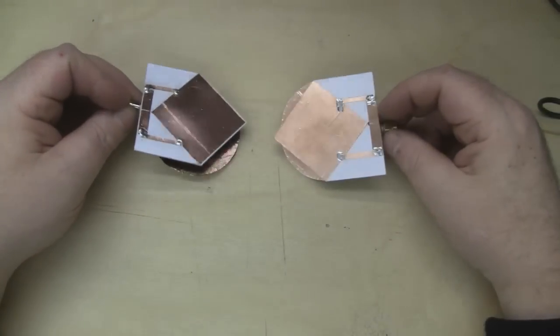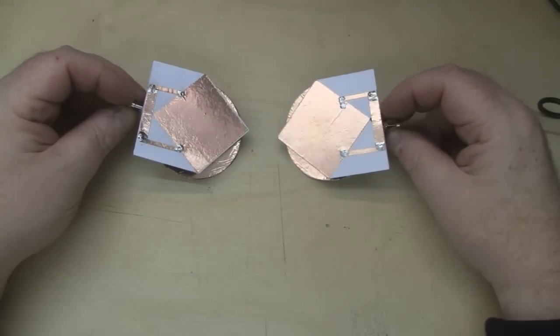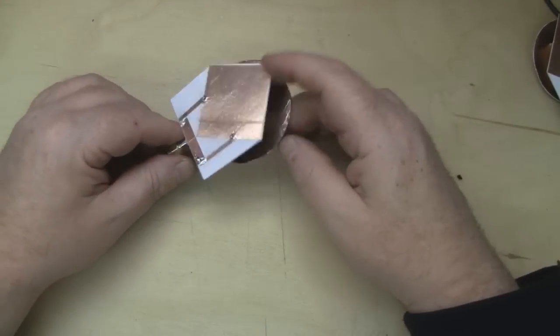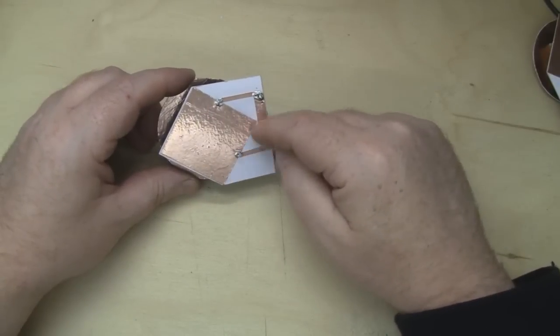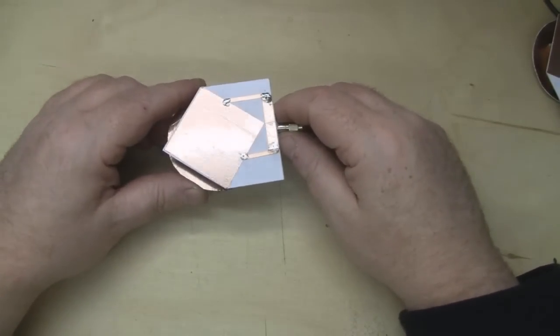When is a square not a square? Well, when it's got circular polarization. So in this video we're going to take a look at making a simple patch antenna, but this time it's got circular polarization.